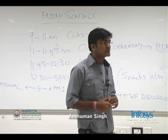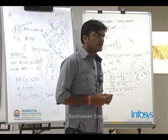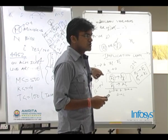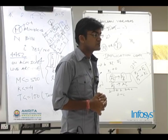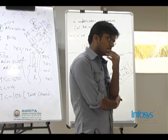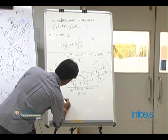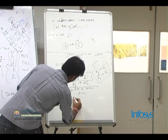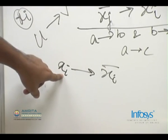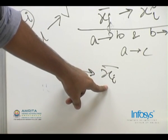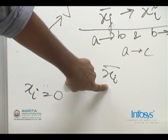Because this is a directed graph. XI implies XI bar could not be always false, because let's say I say XI implies XI bar. This expression is true when this is 0 and this is 1. So if I put XI equal to 0 then this expression still remains true.